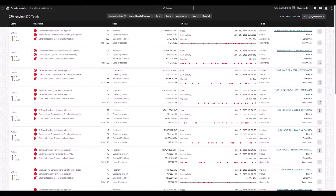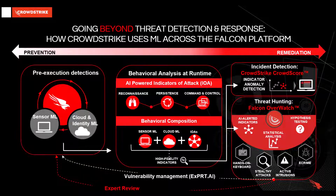From here, admins can quickly respond, remediate, or investigate incidents further. The Elite Falcon Overwatch threat hunting team is also enabled by machine learning at this stage. The team harnesses AI and ML signals to find and investigate advanced threats. Human and machine intelligence combined makes for powerful security capabilities.